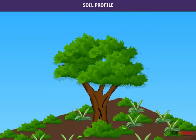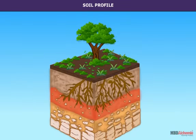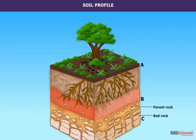Soil profile: Soil is formed in layers from parent rock upward. This layering arrangement is known as the soil profile. The layers of soil are also known as horizons. Generally, there are three horizons designated as A, B, and C. C is the bedrock, B is the subsoil above it, and A is the soil proper and contains humus.